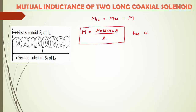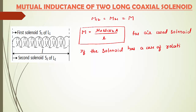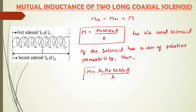This is the final equation for an air-cored solenoid — the solenoid core is filled with free space or air. If the solenoid has a core with relative permeability μr, then the equation is modified to: M = μ₀μr × n1n2A / L.